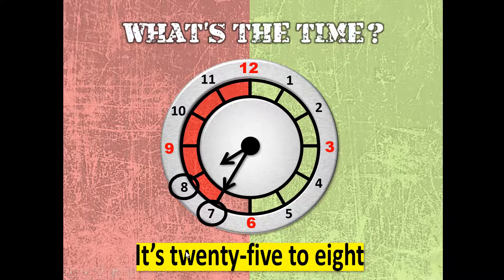Why is it not seven thirty-five? Because the remaining time — five, ten, twenty, twenty-five — means twenty-five minutes more and it will become eight already. So there are twenty-five minutes left, then the time will become eight.